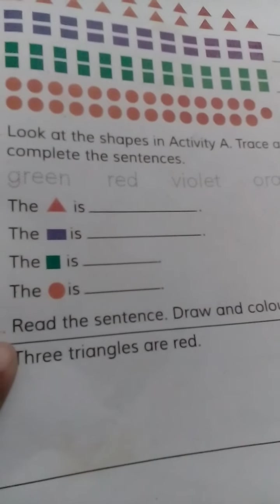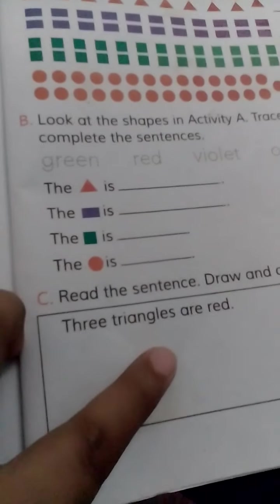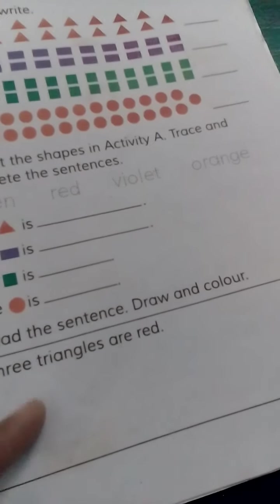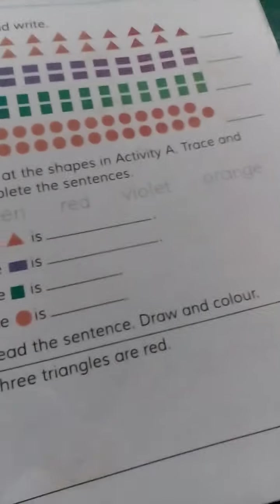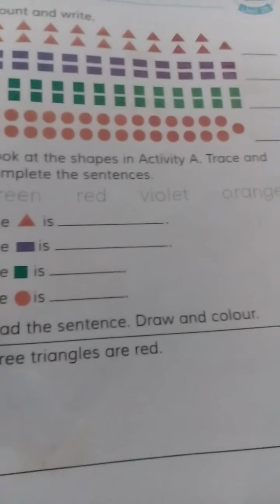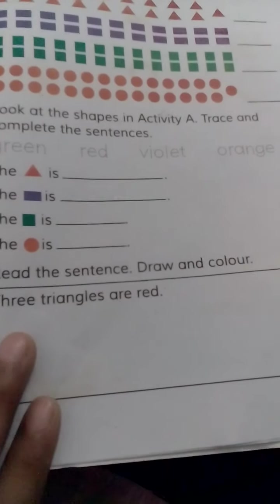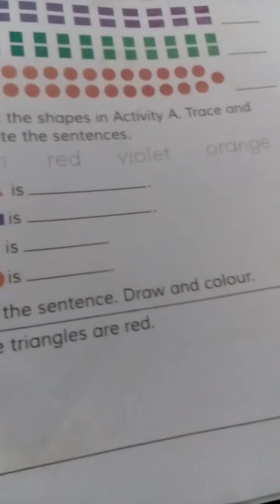Now in Section C — draw and color. Three triangles are red. This is very simple and very easy — too much fun! This is how we draw the three triangles, but not in your textbook — we can't spoil it. So we draw and paint the three triangles red.